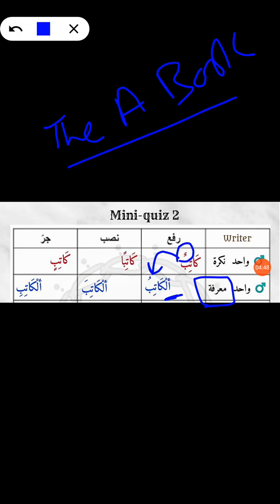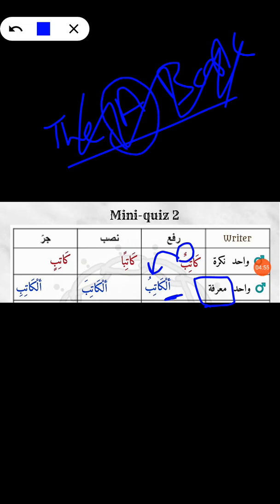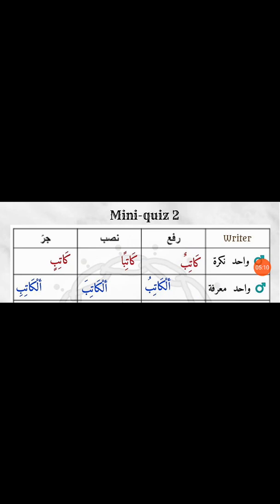It's either 'a book' or 'the book' — never both. So first you make the rafa form, then nasab form al-katiba, then jar form al-katibi. So altogether: kathibun, kathibin, kathibin, al-katibu, al-katiba, al-katibi.